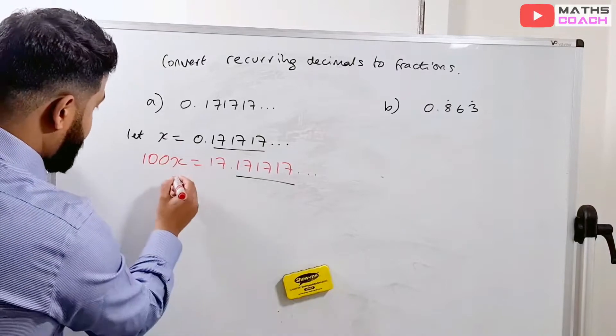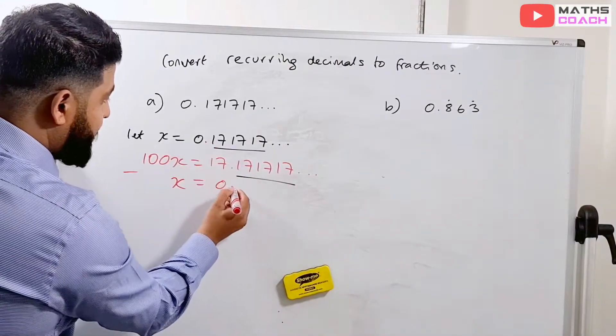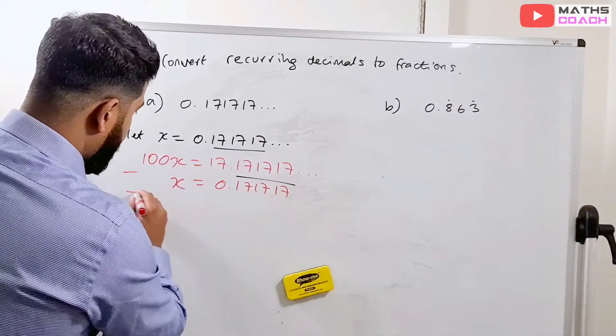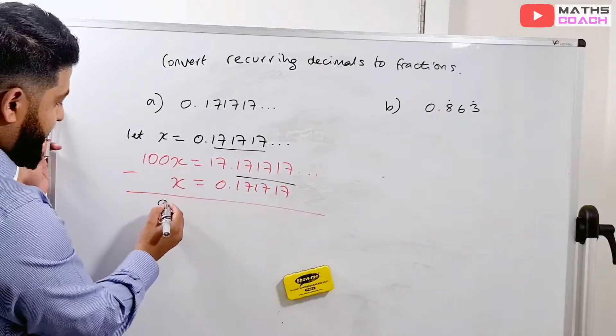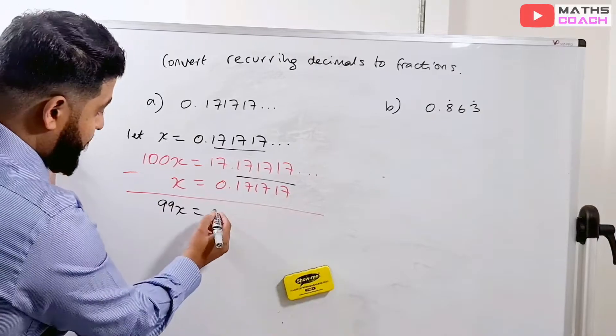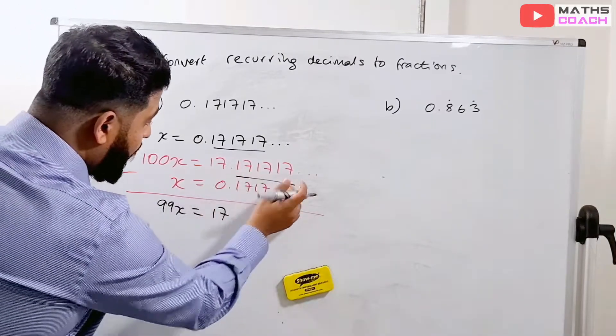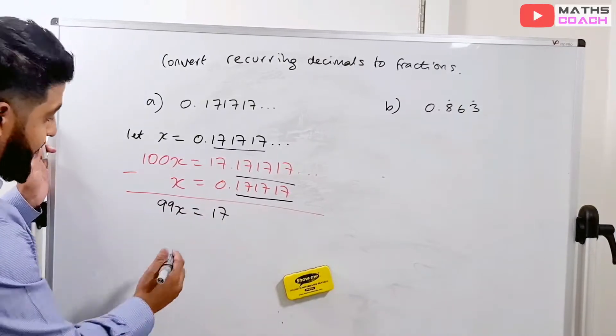So let's do this. We are going to bring our x back here and we're going to do 100x take away x. And remember, x was 0.171717. Let's see what we get. So 100x take away x is 99x. 17 take away 0 is just 17. And all of this, take away all of that, just cancels out.